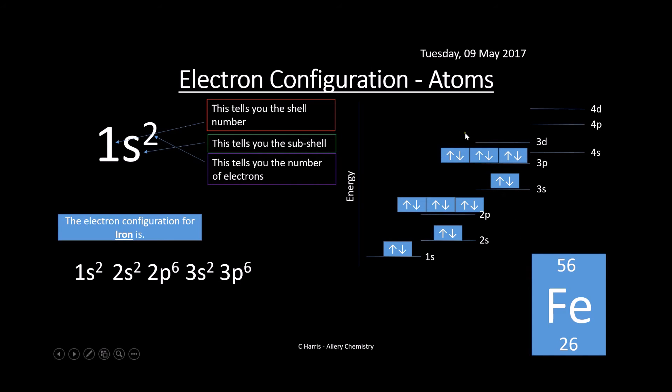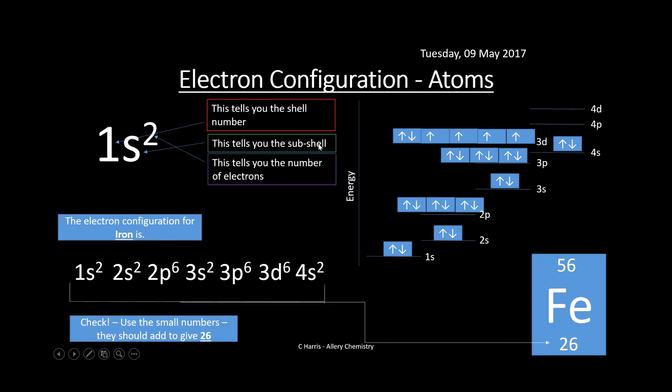Notice it's weird at this stage because we actually fill the 4S first before the 3D. Seems confusing, but that's how it goes. The 4S is slightly lower in energy than 3D, so it doesn't have to be in numerical order. You can see we've got six electrons in the 3D - five singly paired and one paired up in this orbital. Check the small numbers and make sure they add up to 26.